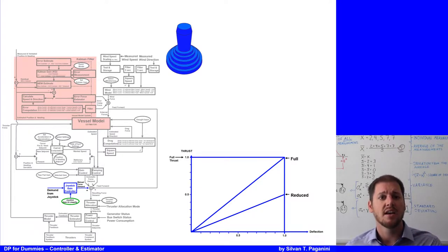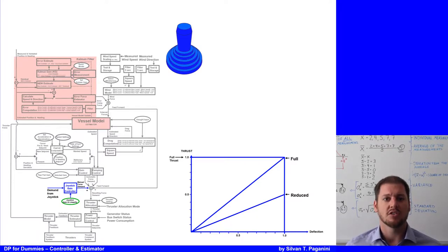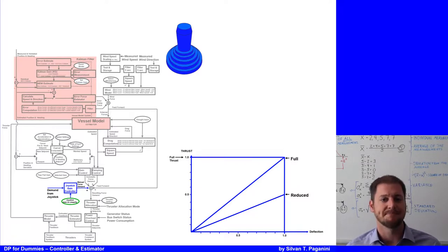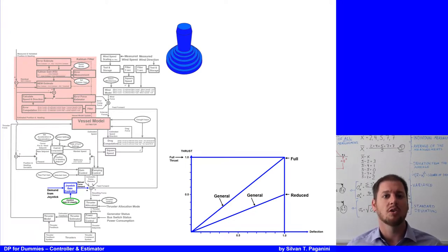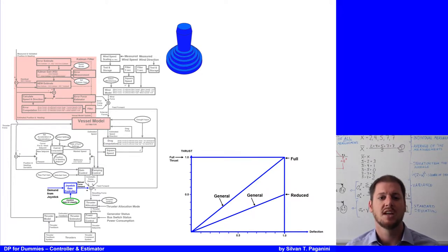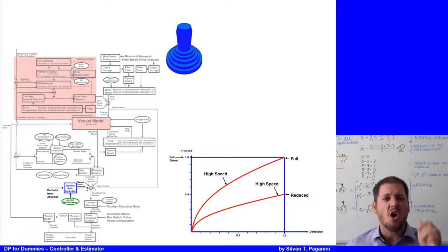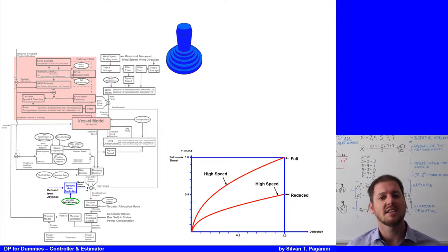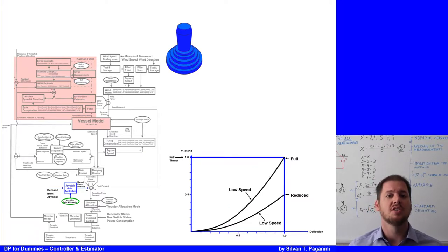For example, pushing the joystick full ahead in reduced thrust mode will only use half of the available thrust. The applied thruster force for axes under joystick control can also be scaled in various ways. This scaling — called precision — gives a different response to joystick movement depending on configuration and operational requirements. The DPO can select general, high speed, or low speed. The general setting is a linear relationship between joystick movement and thruster force. In high speed maneuvering, small joystick movements produce large thruster force changes that decrease with further movement. In low speed maneuvering, the relationship between joystick movement and force is progressive.